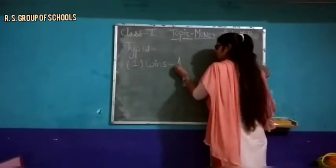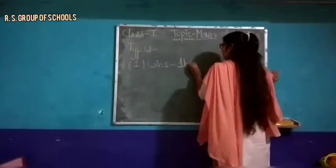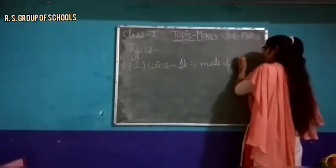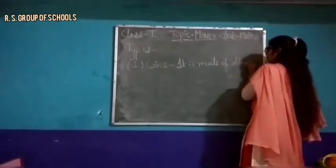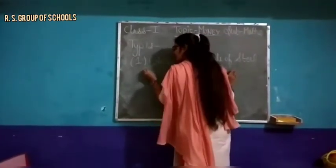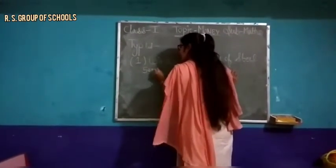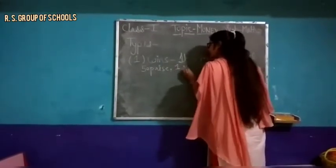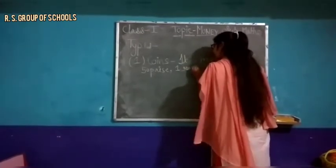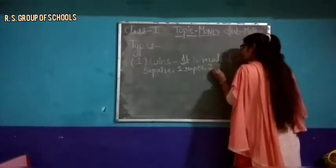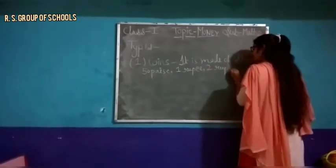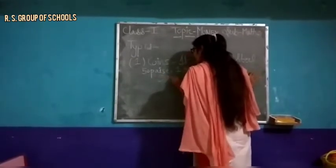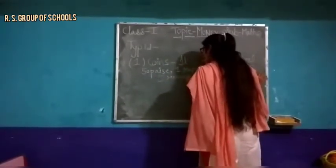So coins are made of steel. How many types of coins are there? Fifty paise hote hai, one rupee hote hai, two rupees hote hai, five rupees hote hai, and ten rupees hote hai.